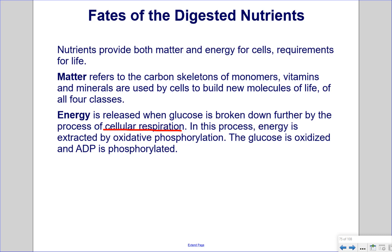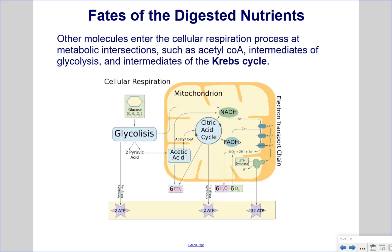The glucose is oxidized and ADP is phosphorylated. Other molecules enter the cellular respiration process at metabolic intersections, such as acetyl coenzyme A, intermediates of glycolysis, and intermediates of the Krebs cycle. Glycolysis breaks down glucose into pyruvic acid, and then pyruvic acid along with other intermediates enters the mitochondrion, where oxygen is used to further break down these intermediates and release energy to charge ADP into ATP.